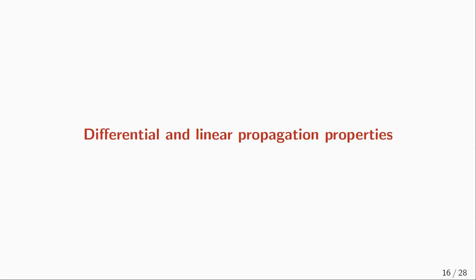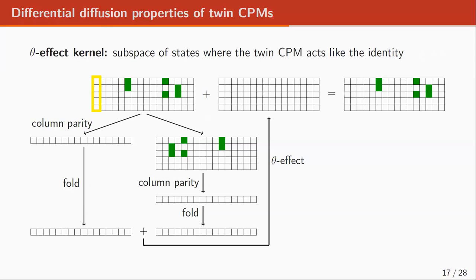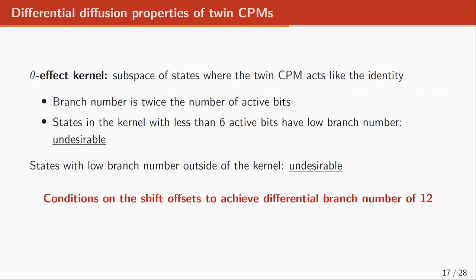Now let's look at the differential and linear properties of our twin CPM. The theta effect kernel corresponds to the set of states where the twin CPM acts like the identity. For example, an input state can have its first column parity with zero active bits, and we can find offsets such that the second column parity also has zero active bits, meaning the theta effect has zero active bits and input and output states are the same. The branch number corresponds to twice the number of active bits, and we want to avoid states in the kernel with fewer than six active bits. We specify conditions on the shift offset to achieve a differential branch number of 12.